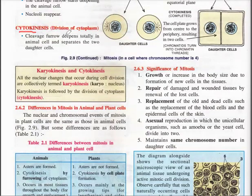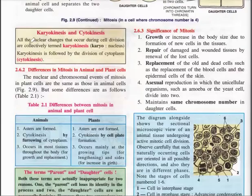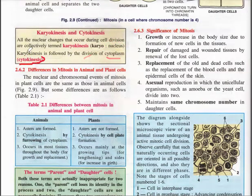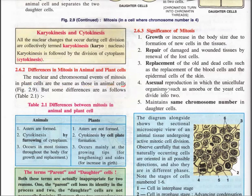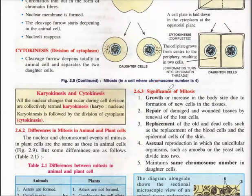Cytokinesis is the division of the cytoplasm, seen after telophase. Karyokinesis refers to all nuclear changes that occur during cell division. Karyokinesis is followed by cytokinesis. The nuclear and chromosomal events of mitosis in plant cells are the same as in animal cells, with a few differences. The significance of mitosis includes growth, repair, replacement, asexual reproduction, and maintaining the same chromosome number.